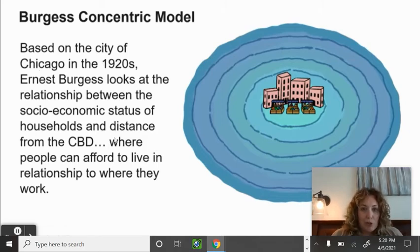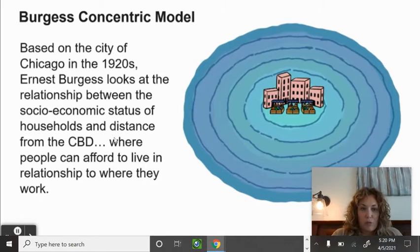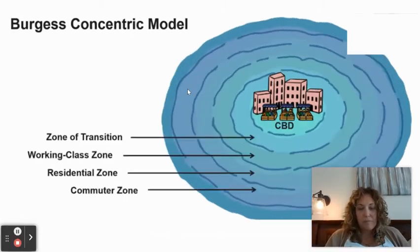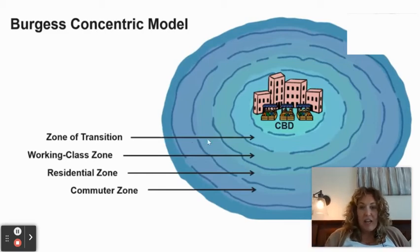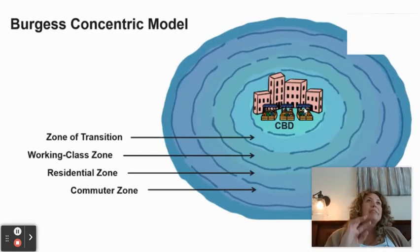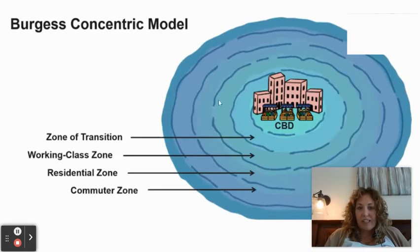Burgess Concentric Zone Model: based on Chicago in the 1920s, Ernest Burgess looked at the relationship between socioeconomic status and distance from the CBD. The central business district is in the middle; the first ring is the zone of transition moving out of high-rises; then a working class zone where factory and sewage workers lived — relatively close to the CBD because they were low income and needed affordable transportation.